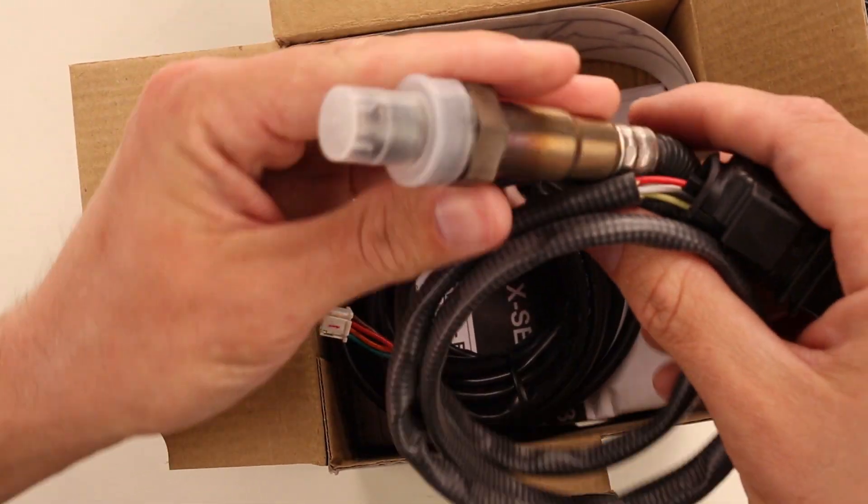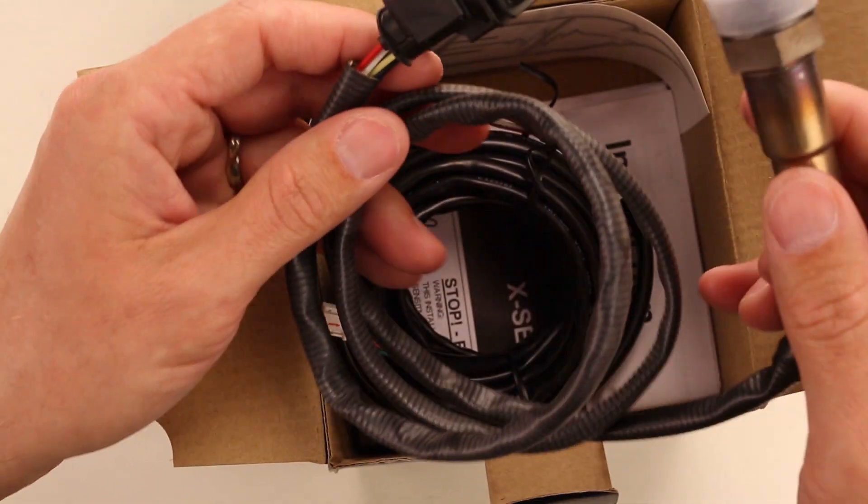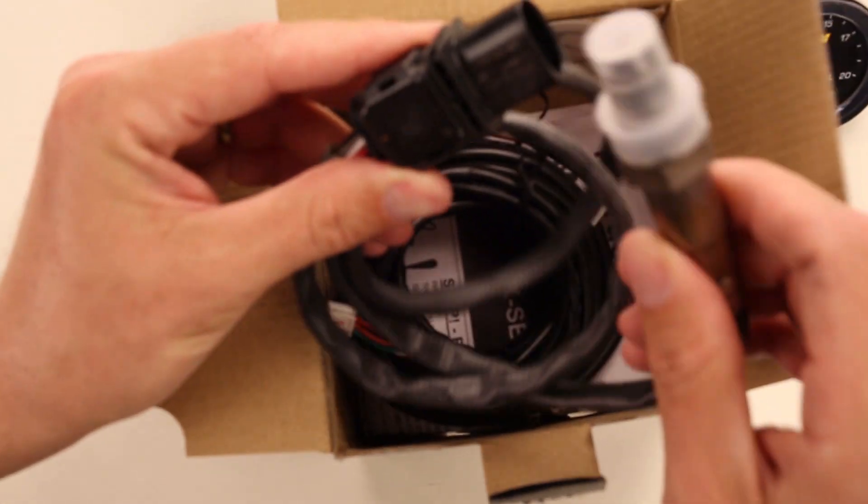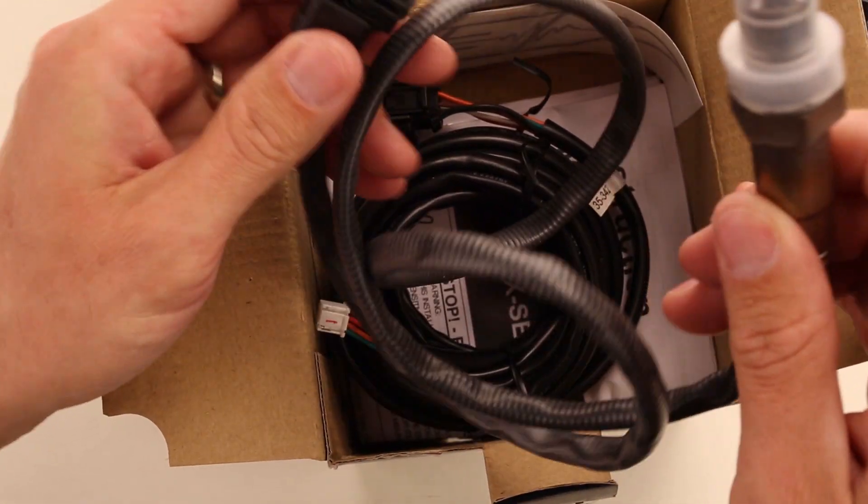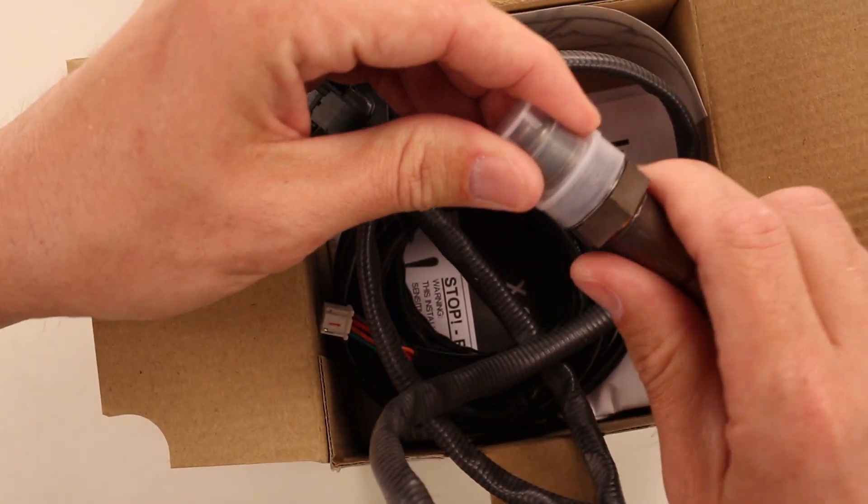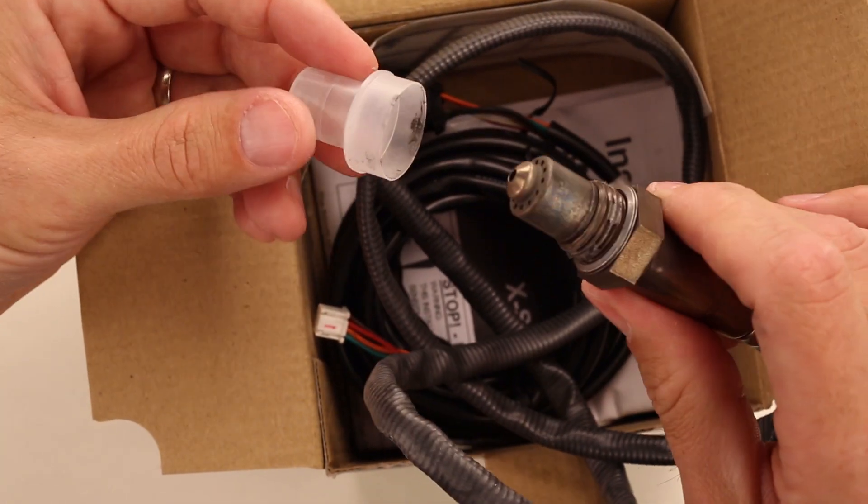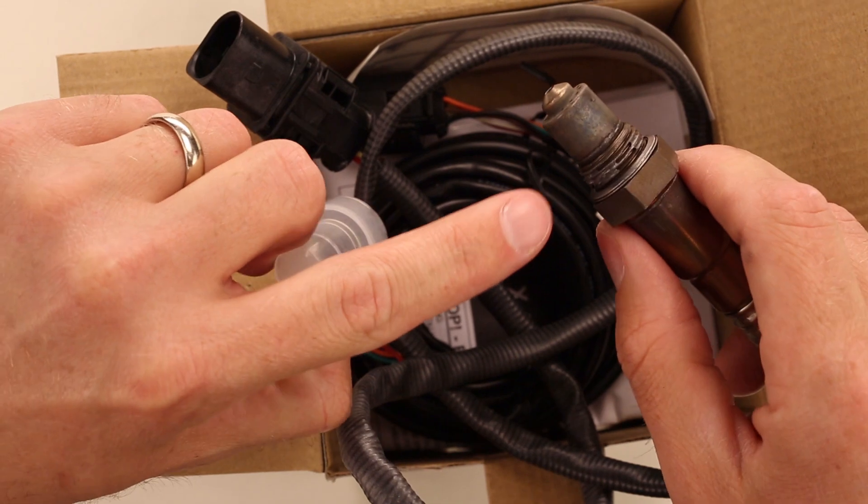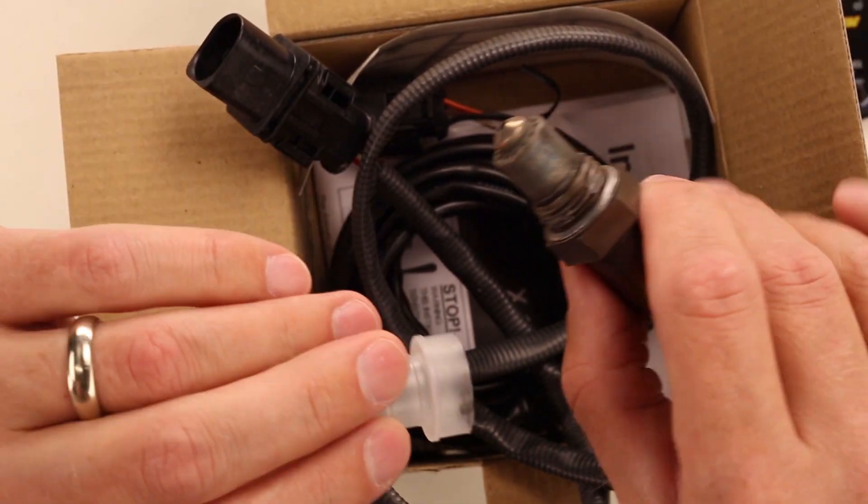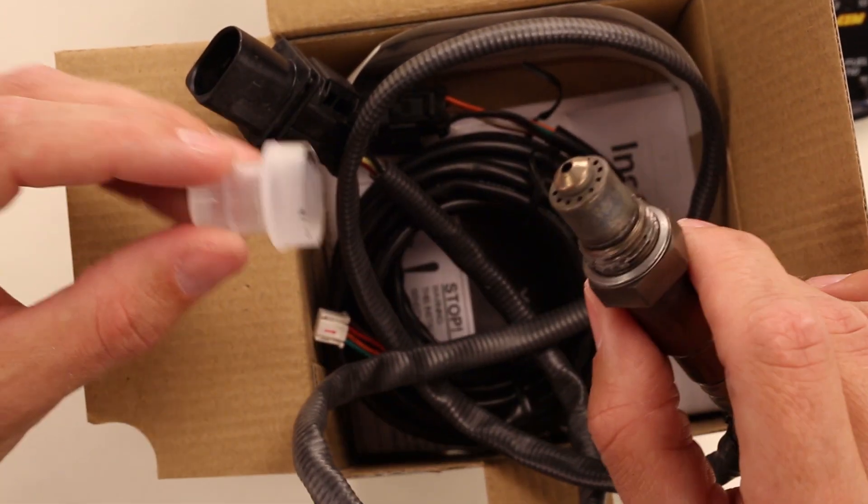Here is Bosch's latest wideband O2 sensor. A traditional O2 sensor. It represents Bosch's latest technology with the highest reacting, best resolution. That's anti-seize on the threads. You don't want to touch that, otherwise it will be all over everything that we own.